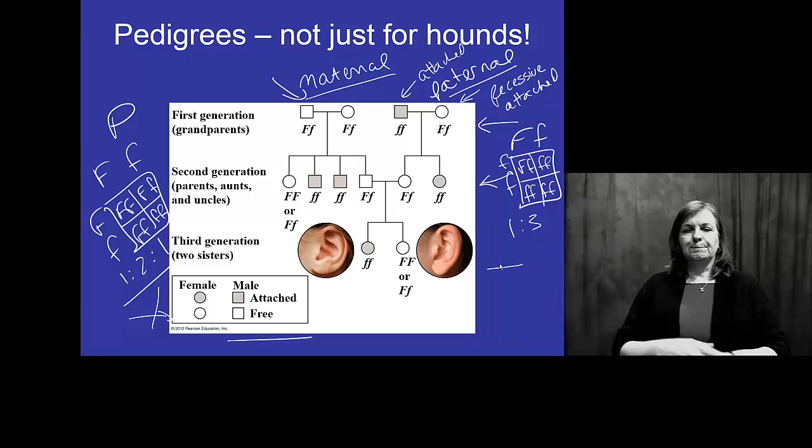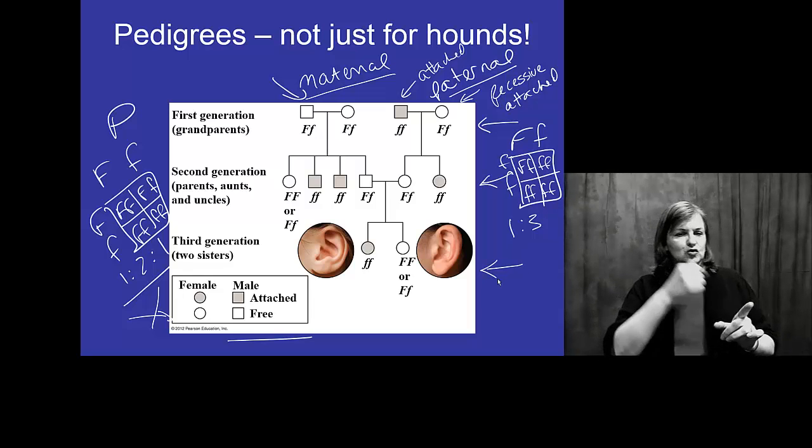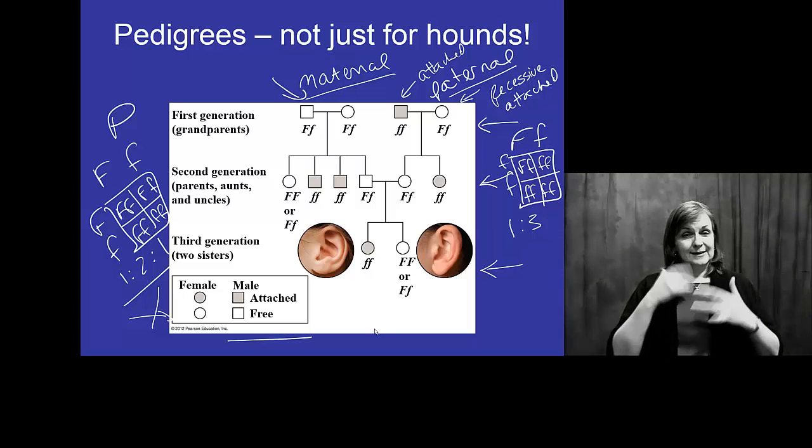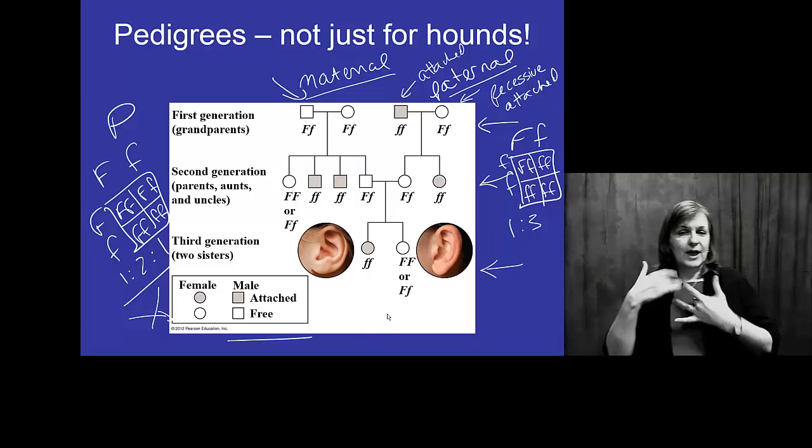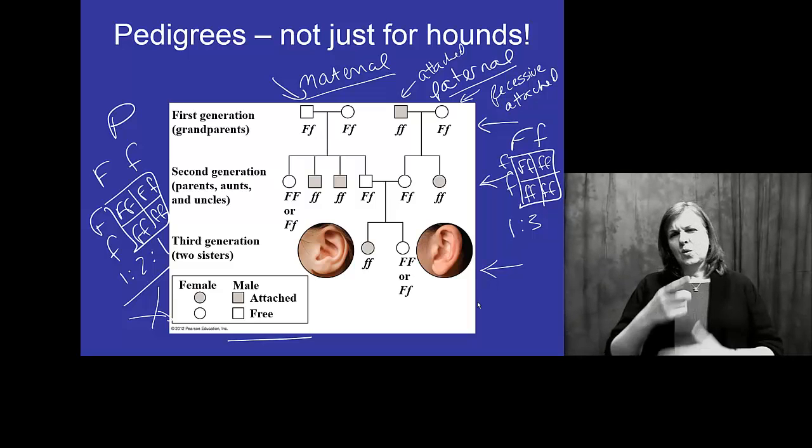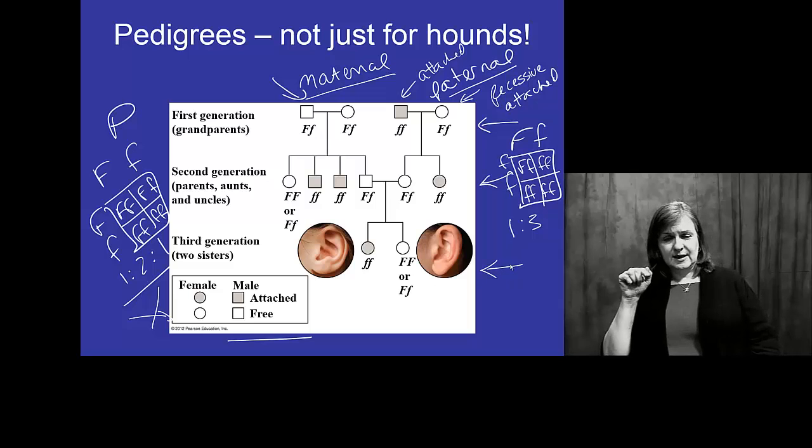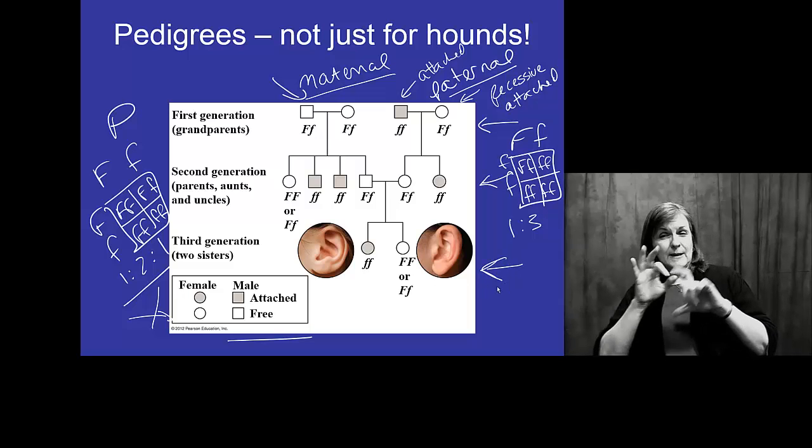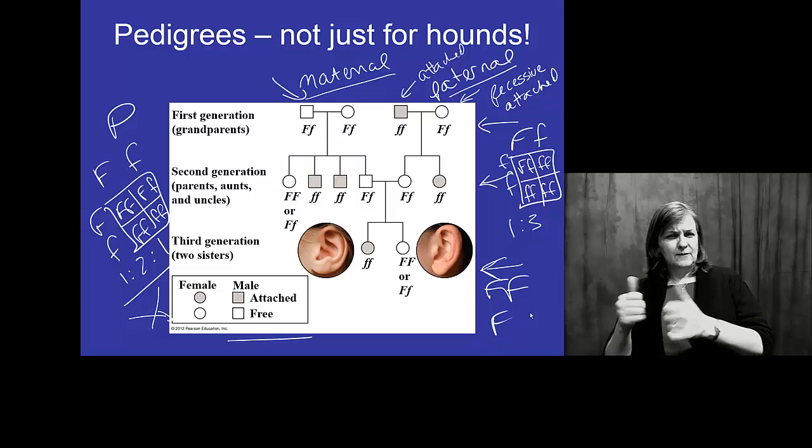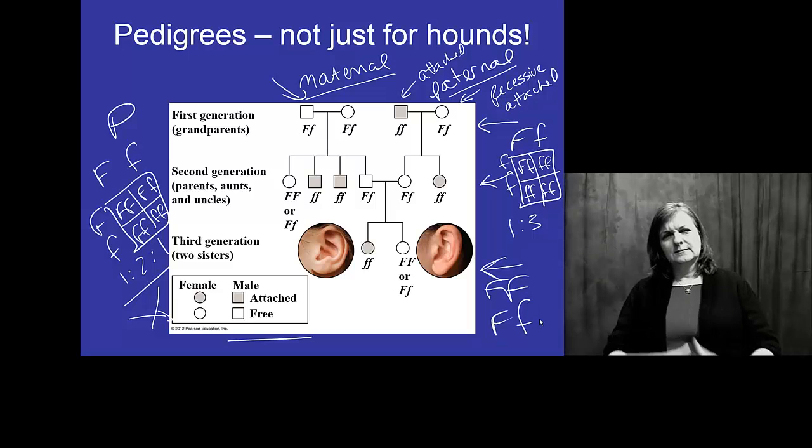So, then when we finally get down to our sisters here at the bottom, one has attached ear lobes. One has unattached ear lobes. So, what do you think? Do you think this sister is big F, big F, or big F, little f? Why would you think that?